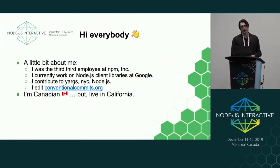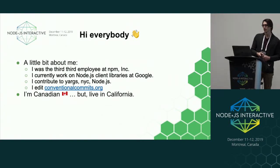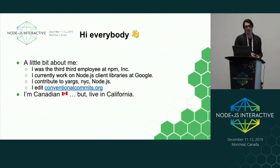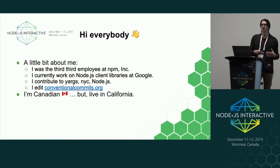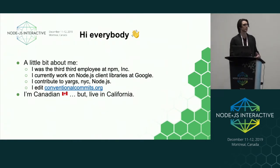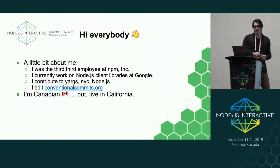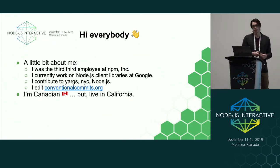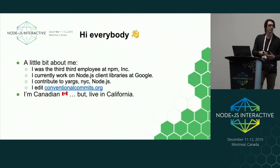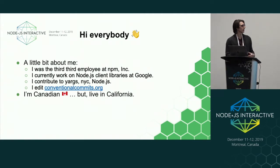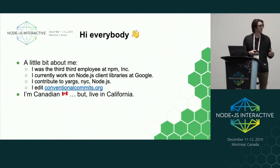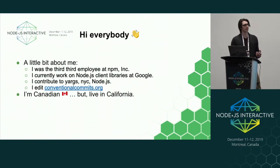A little more about me: I was the third employee at npm Inc., so I've been involved in the Node.js and npm community for quite a few years. I currently work on Node.js client libraries at Google, helping teams within Google Cloud make Node.js client libraries that are idiomatic to the community. In open source, I contribute to YARGS, I wrote the tool NYC for collecting code coverage, and I contribute to Node.js. I also edit a specification called conventionalcommits.org. I'm Canadian, but I live in California — no one's perfect.